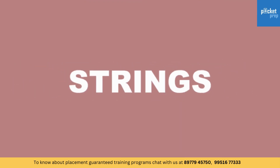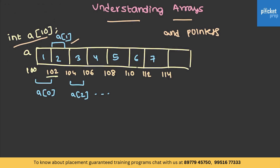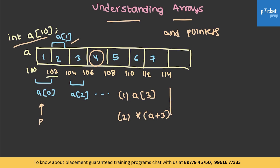We have seen two different ways to access any content: with its index, or with the name of the array followed by a dereferencing operator. We've seen these two ways so far. Let's try to explore one more way — where we make a pointer point to the first location of the array.